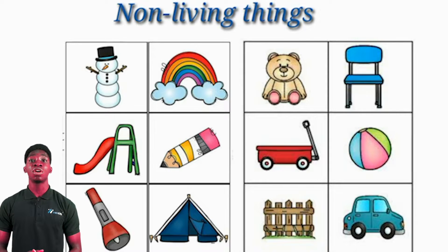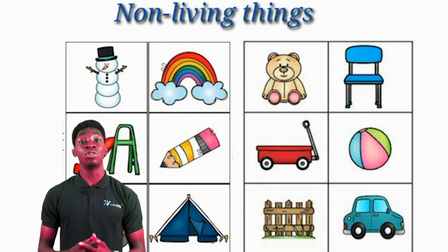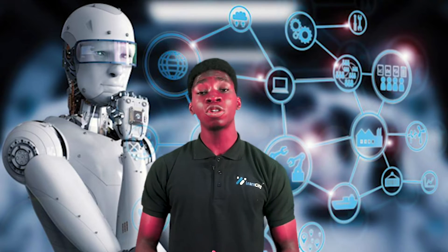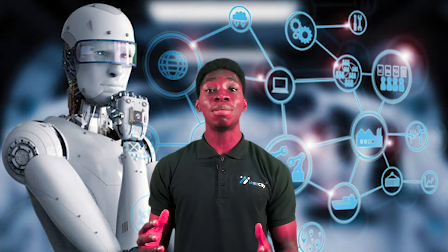These are objects we find around ourselves every day that don't have life. A question may come to mind: how about things that look almost like they have life? For example, robots and computers. So today we're going to be talking about the things that make an object a living thing and the things that make other objects non-living things.